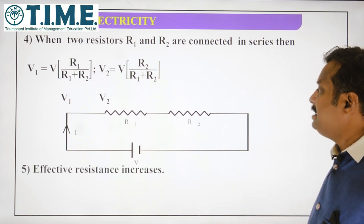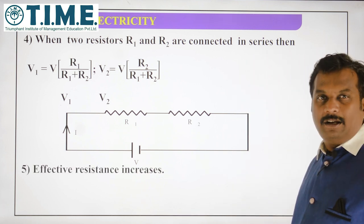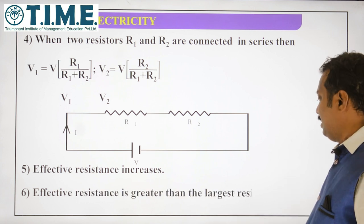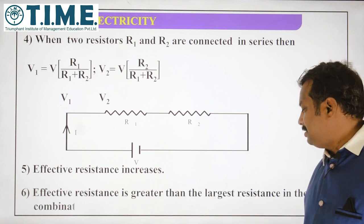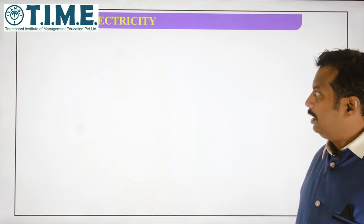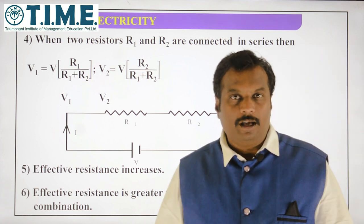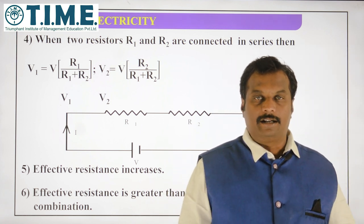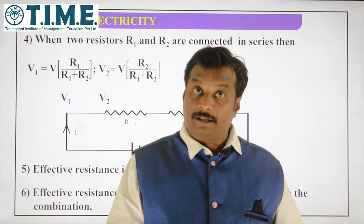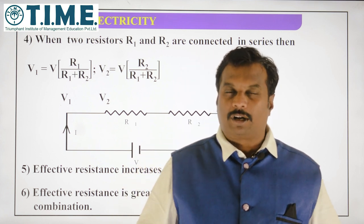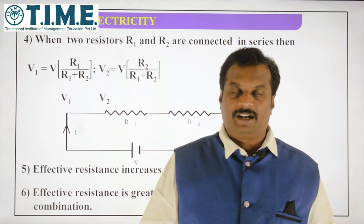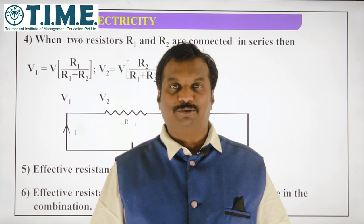The effective resistance increases in series combination. The effective resistance is greater than the greatest or largest resistor. I hope you are clear with these ideas about series combination of resistors. Subscribe and watch the next video — wish you all the best and thank you.